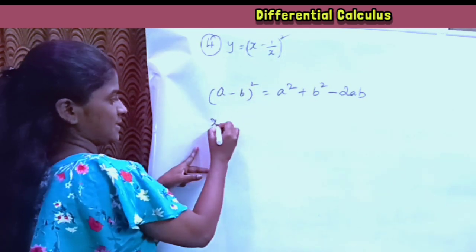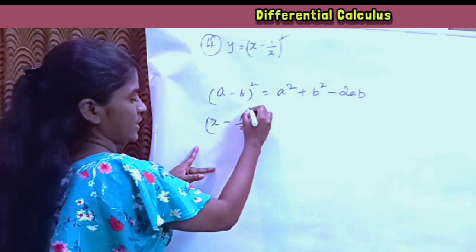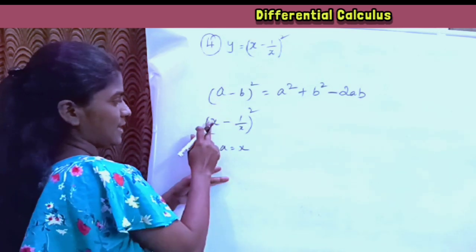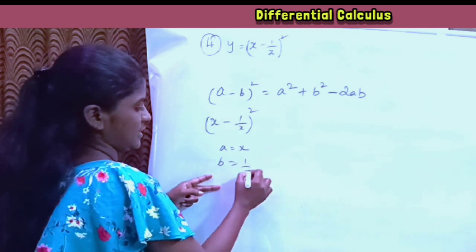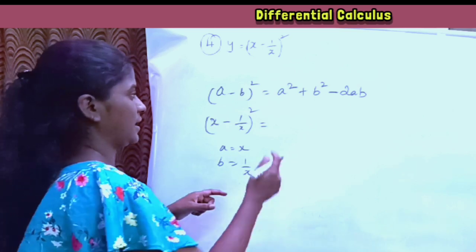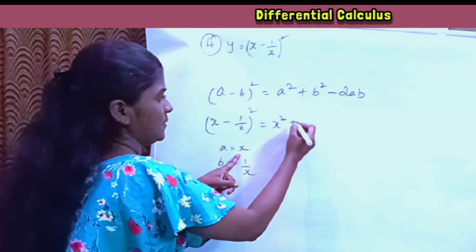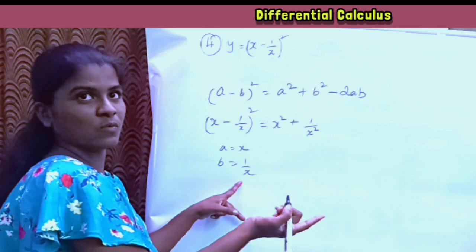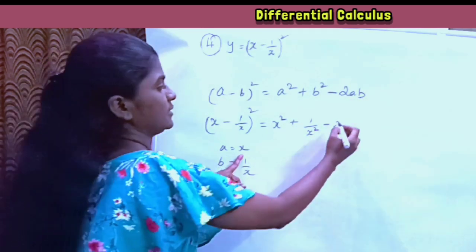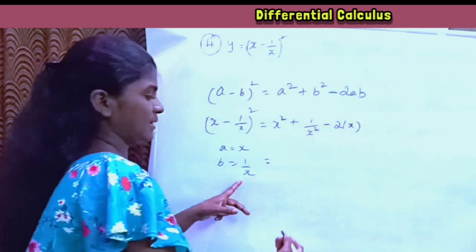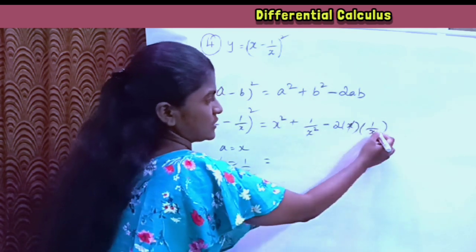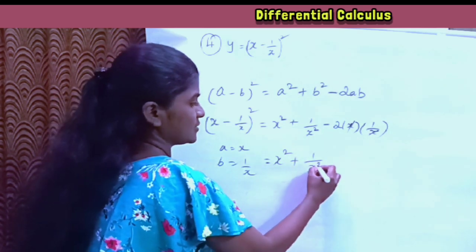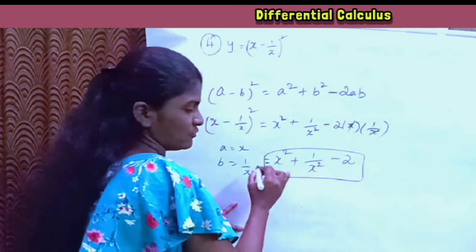Substituting a equals x and b equals 1 by x into the formula: x square plus 1 by x square minus 2 into x into 1 by x. The x and x cancel in the last term, giving minus 2. So y equals x square plus 1 divided by x square minus 2.